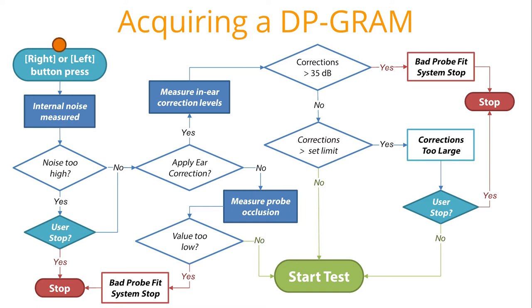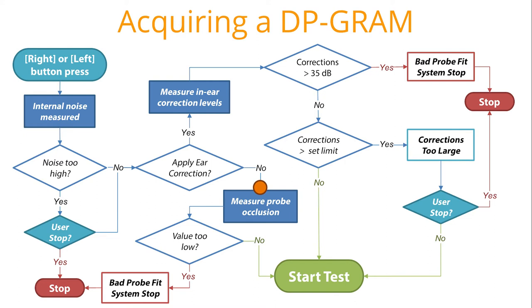After probe insertion, select right or left ear to initiate the test. The internal noise measurement is taken and compared to a noise template. If the noise is too high, you will get a noise-too-high warning message and will be asked to stop or proceed. If you stop, we suggest: one, ensure you are in a low noise testing environment; two, instruct the patient to be as quiet and still as possible; and three, pick a larger ear tip that seals the ear canal better and refit the probe with a deeper insertion. Next, the program evaluates if the ear correction in-ear calibration option is turned on. If not active, the software proceeds to look for probe occlusion using the first test frequency pairs. If the measured value is 35 dB below the desired level, you will see a probe fit error message and the test will be stopped.